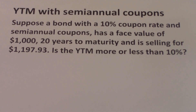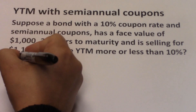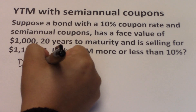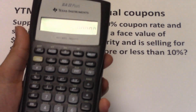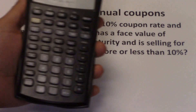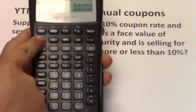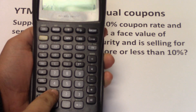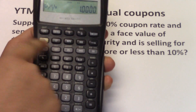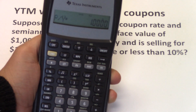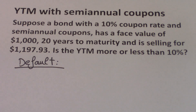If we use the default setting, the periods per year is set to 1. To confirm this, press 2nd I/Y and verify that periods per year equals 1. If not, input 1, press Enter, then the down arrow. So with periods per year set to 1, this is the default, and this is what you need to input.